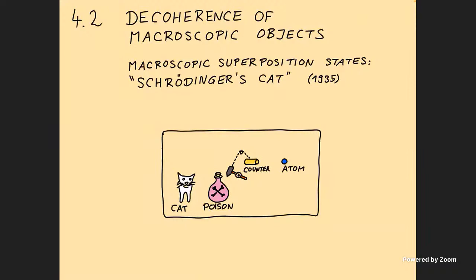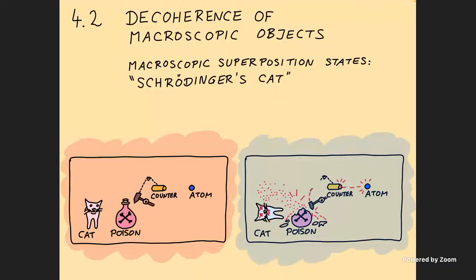Here's the Gedanken experiment. He says there's a box in which there is an atom that can decay — the nucleus can decay. If it decays, it will trigger a counter, think of a Geiger counter. This will trigger a device whereby a vial of poison is broken and the poison is released, poisoning the cat. So the cat will die. If you have left the system unattended for some while, then either the atom has decayed or it has not decayed.